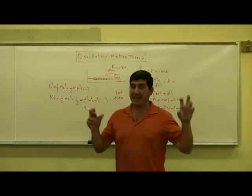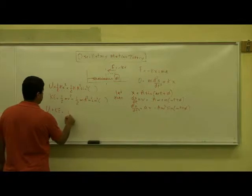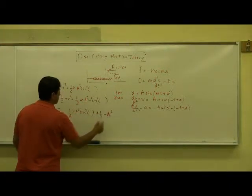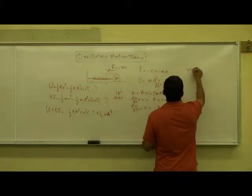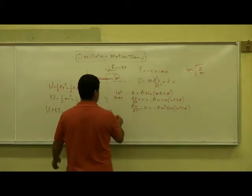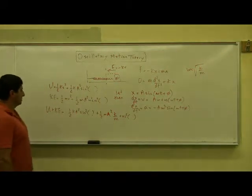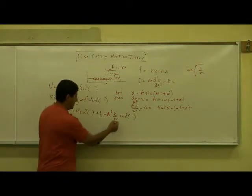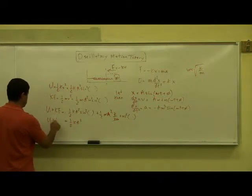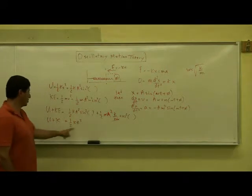If we add kinetic plus potential energy, and the motion is non-damping, the sum should be constant. We have ½k·A²·sin²(ωt + φ) plus ½m·A²·ω². Using the fact that ω² = k/m, the m's cancel, giving ½k·A²·sin²(ωt + φ) plus ½k·A²·cos²(ωt + φ). Factoring out ½k·A², we get sin² + cos² = 1, so the total energy is constant.